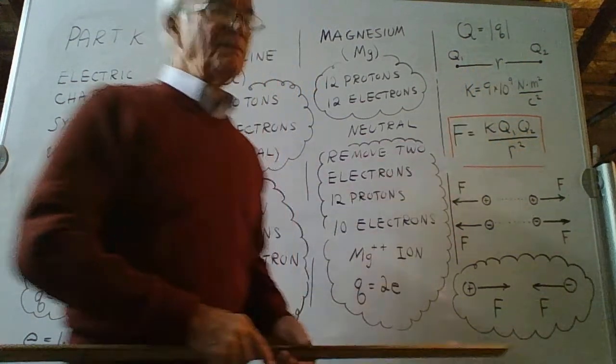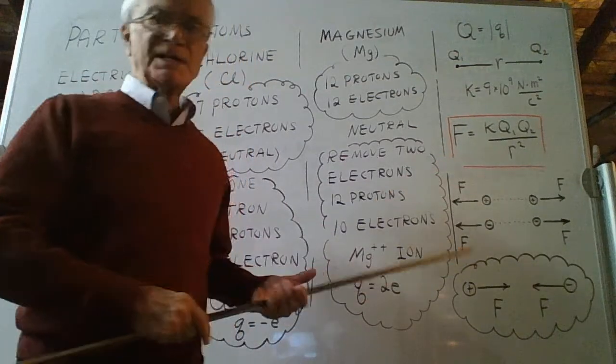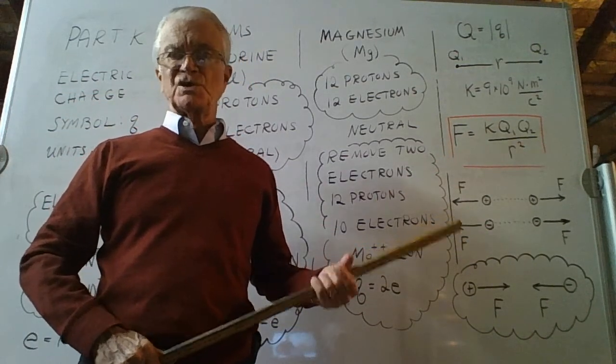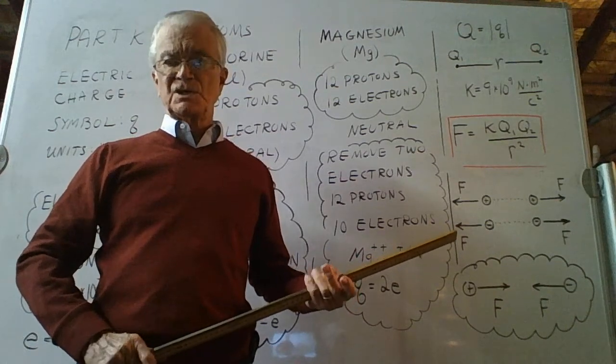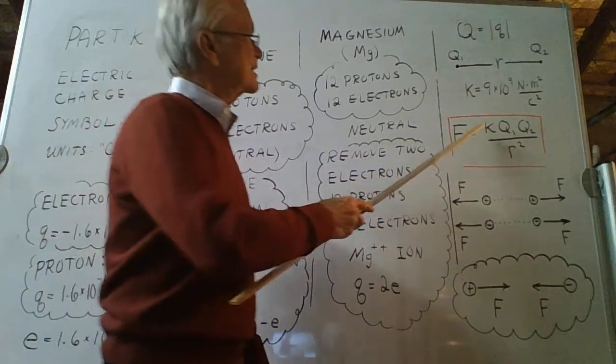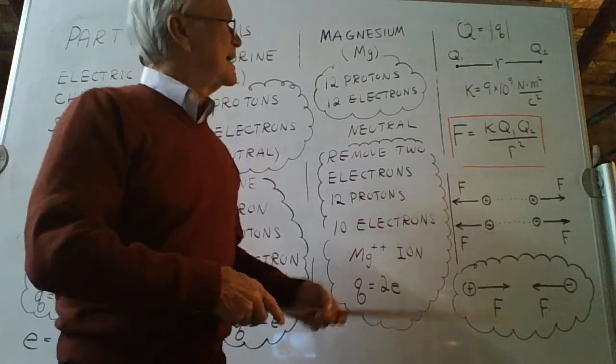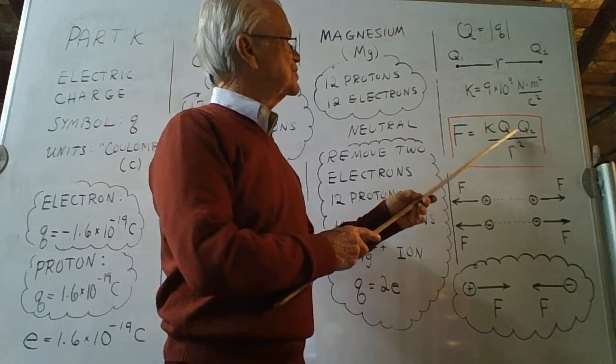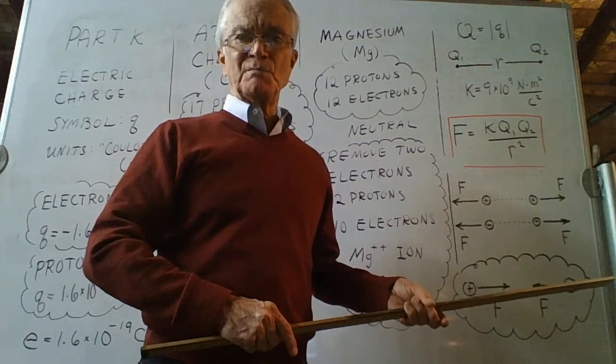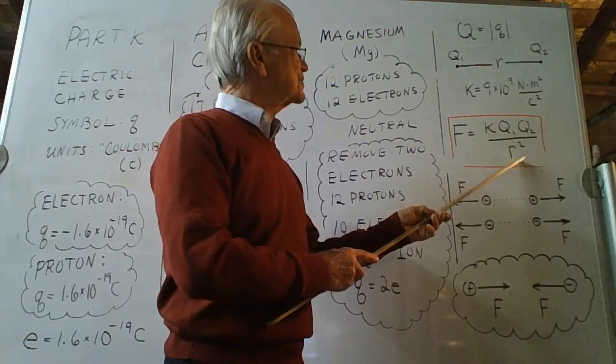And so we have a positive times a positive times a positive divided by the square of the distance between the objects. This equation is quite analogous to the gravitational force equation you saw many days ago. Where instead of a K here, you had the gravitational constant capital G. Instead of Q's, you had M1 and M2 for the masses. And you had the same thing downstairs.